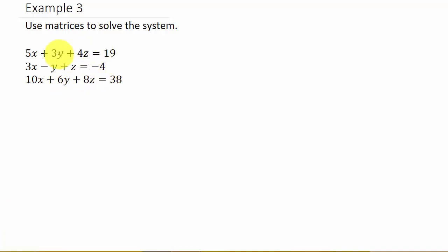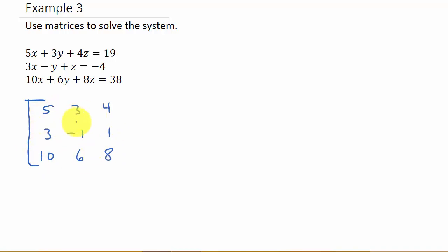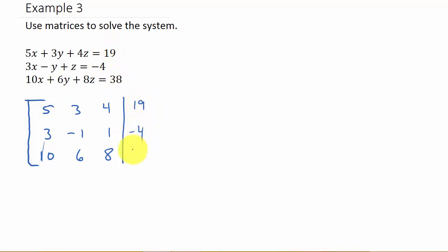The first thing we need to do is rewrite this as an augmented matrix. So I have 5, 3, 4 / 3, negative 1, 1 / 10, 6, 8. These are the numbers in front of the variables: 5, 3, 4 form the column for X, Y, and Z respectively. Same thing for the second row: 3, negative 1, and positive 1. And 10, 6, 8 for the third row. I'll draw a line to represent the equal signs, and then the constant terms are 19, negative 4, and 38.